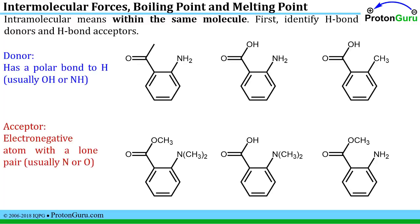This first problem gives us a set of molecules and asks which molecules exhibit intramolecular hydrogen bonding. Intramolecular means within the same molecule. We have to identify H-bond donors and H-bond acceptors within each molecular structure. An H-bond donor is something that has a very polar bond to a hydrogen — usually an OH group or an NH group. The acceptors are electronegative atoms with a lone pair, usually a nitrogen or an oxygen, so that the polarized hydrogen will have an attraction for the lone pair on the acceptor.